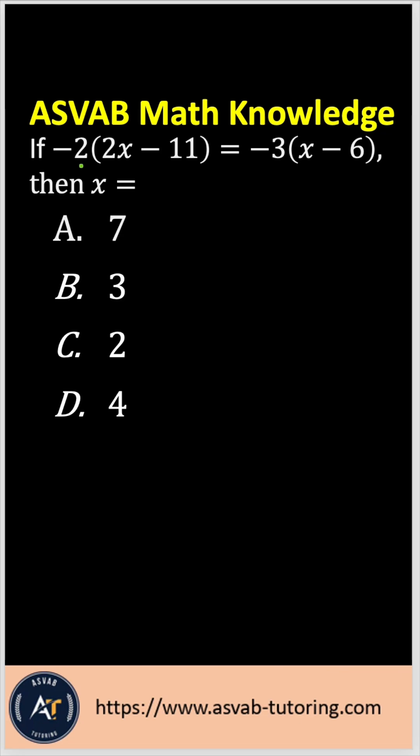So let's do that. First of all, what do you have to do? You have to simplify that. Let me just write that down. So -2 times 2x gives you -4x, negative times negative is positive 22 equal -3x plus 18, right?